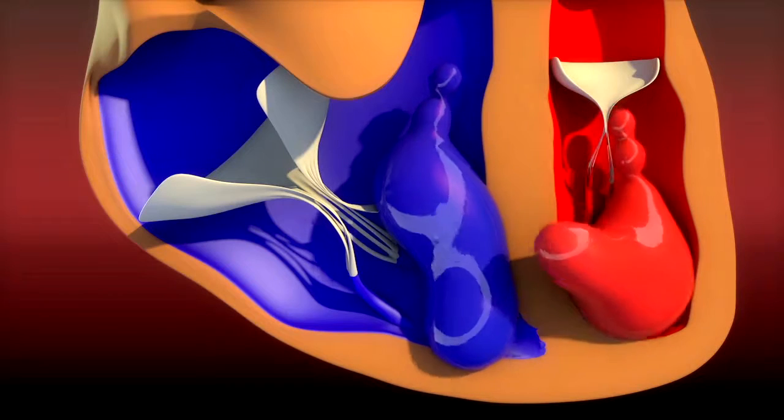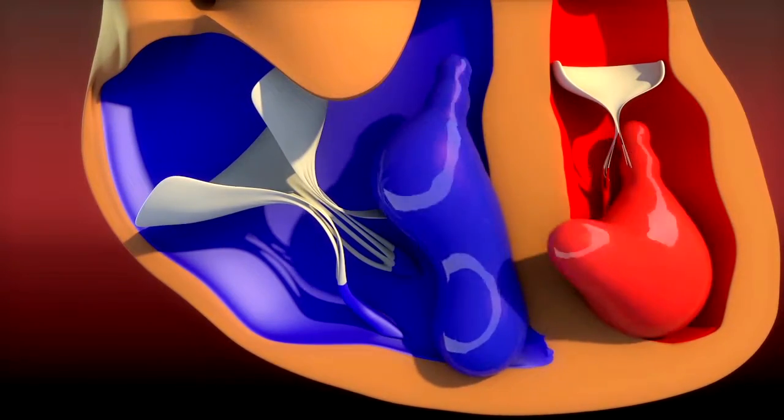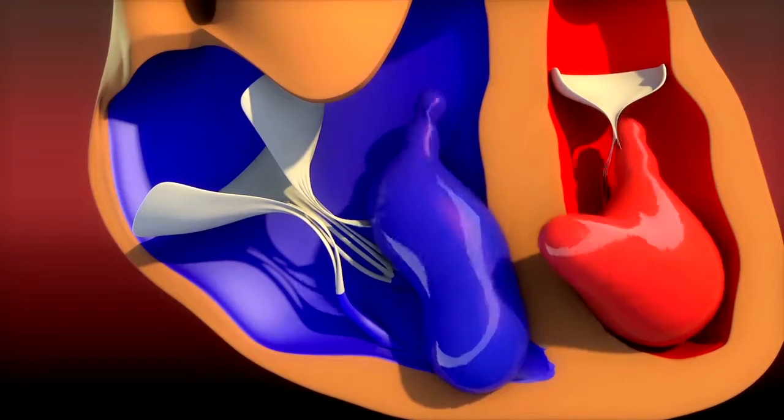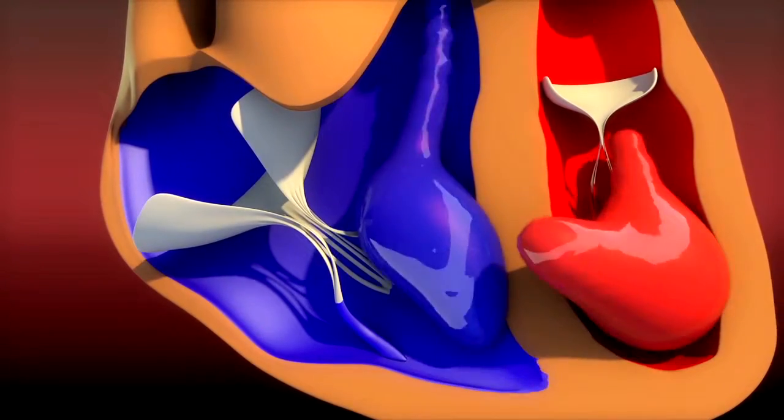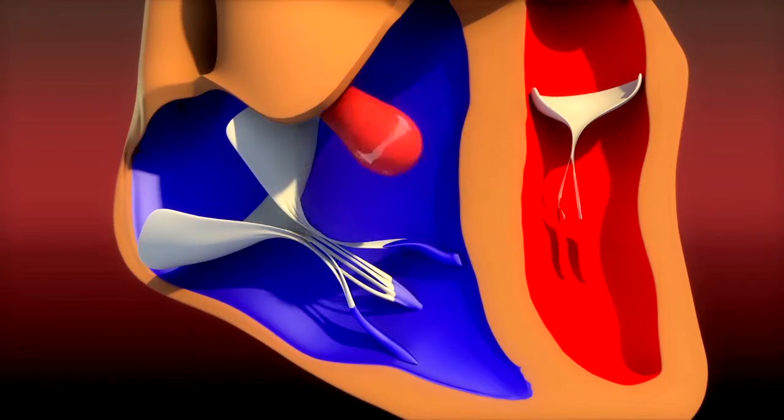The heart is divided into two parts. The right part fed with deoxygenated blood and the left part with oxygenated blood. The blood leaving the heart goes into two different directions according to the part of the heart it comes from.